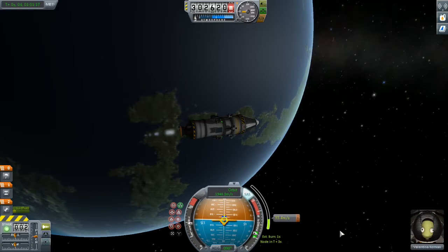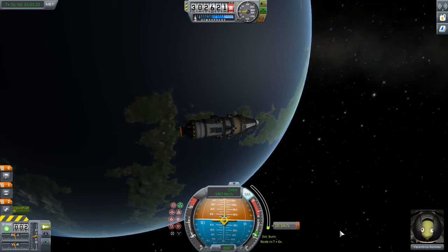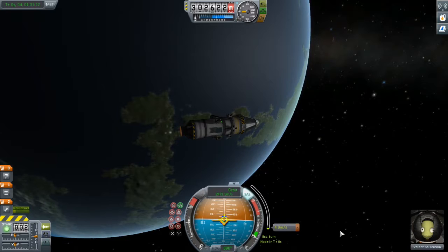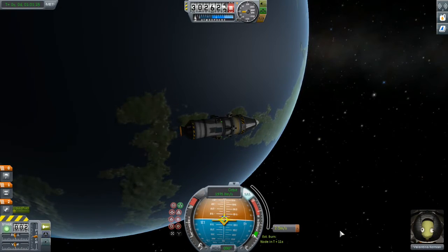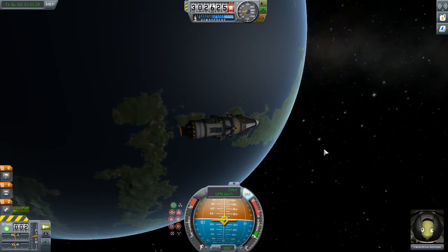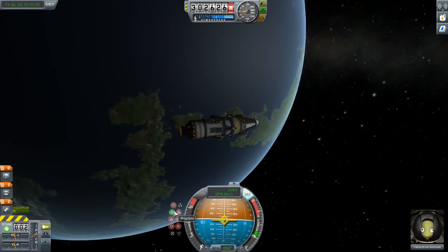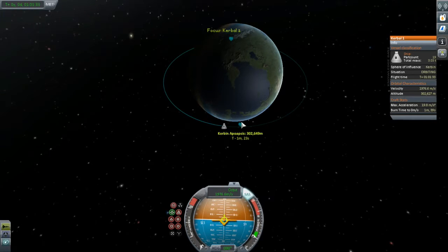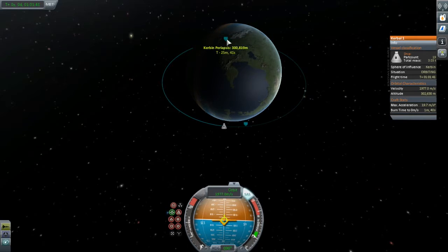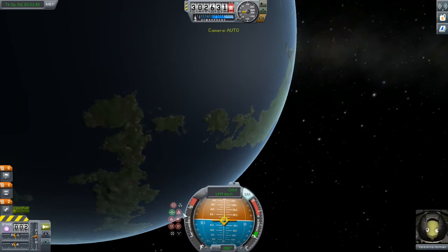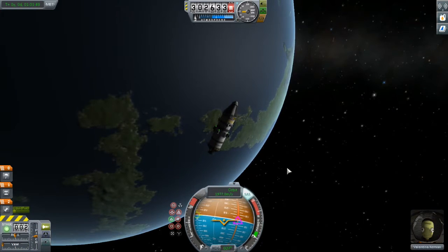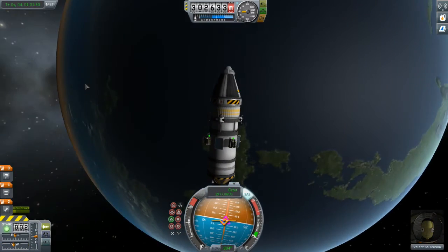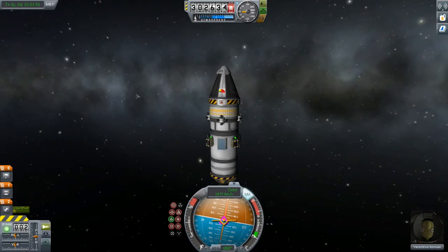We'll just burn until that bar gets pretty close to the bottom. There we go. And we'll switch out to map view. Well, I really did get right down to the bottom there. Let's get rid of that. Switch out to map view and take a look at what our orbit looks like. Maybe a little bit further. Well, that ain't bad. There we go. And that's it. Here we are out here at 300 kilometers.